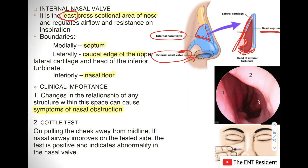A very significant clinical test to find out involvement of the internal nasal valve in nasal obstruction is the Cottle test. You pull the cheek away from the midline, as shown in this picture. If the nasal airway improves on the tested side, the test is called positive and indicates an abnormality in the nasal valve on that side. This is a very important test in clinical examination of the nose to help understand if nasal obstruction is due to an abnormality in the internal nasal valve.